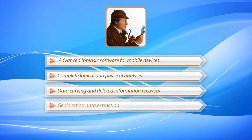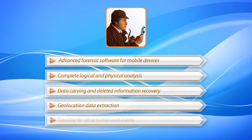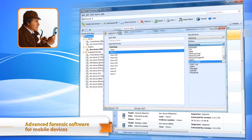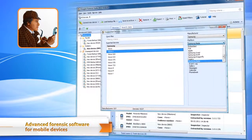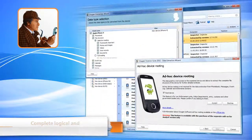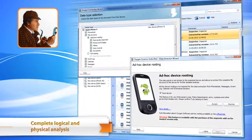Oxygen Forensic Suite 2012 allows analyzing suspect activity on a timeline and on a map. Experts can gain access to all user data stored on a mobile device. It retrieves all user data using physical and logical extraction methods.